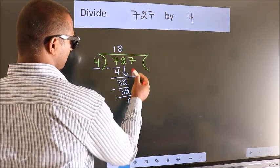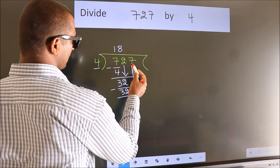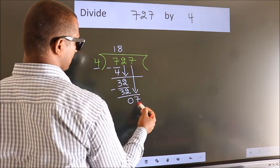After this, bring down the next number. So 7 comes down.